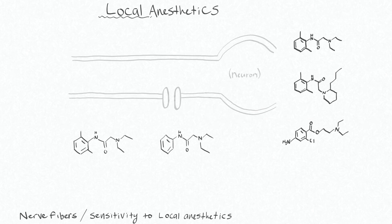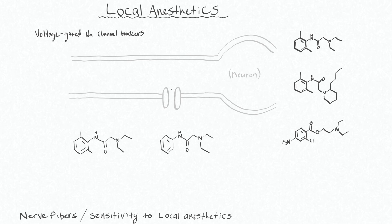Local anesthetics are voltage-gated sodium channel blockers, so they basically have the ability to block any neuron, whether it's an afferent or an efferent. And since the voltage-gated sodium channel is so ubiquitous, local anesthetics also have significant potential for toxicity, which we'll also talk about in this video.